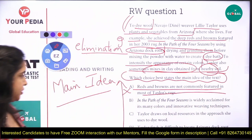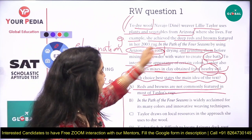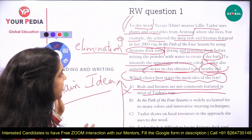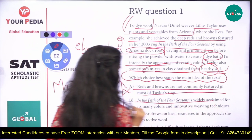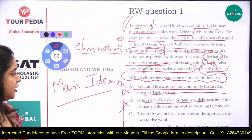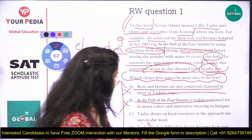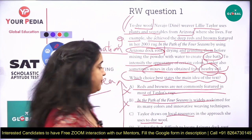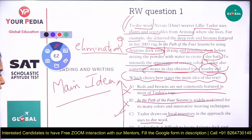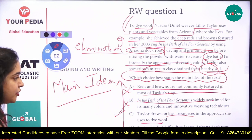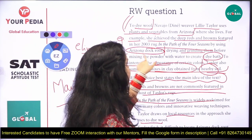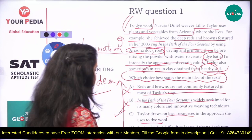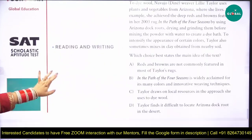Using the elimination method: Option A says reds and browns are not commonly featured in most Taylor rugs — we don't have evidence for that, so eliminate it. Option B says 'Path of Four Seasons' is widely acclaimed for innovative weaving techniques — we have no information about that either, so eliminate it. Option C says Taylor draws on local resources in her approach to dyeing wool — she does dye wool and uses local plants and vegetables, so this looks correct. Option D says Taylor finds it difficult to locate Arizona dock root — we have no evidence of difficulty, so eliminate it.